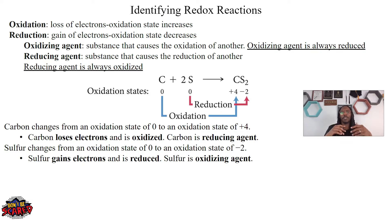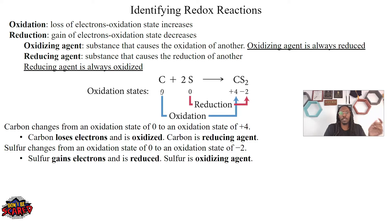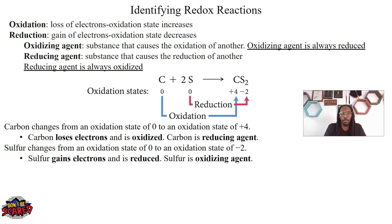Think of it this way: if you're the reducing agent, the opposite is happening to you, and if you're the oxidizing agent, the opposite is happening to you. The key steps to identify reducing and oxidizing agents: first, determine the oxidation states; then decide what's being oxidized and what's being reduced; then properly figure out which one is your reducing agent and which is your oxidizing agent.